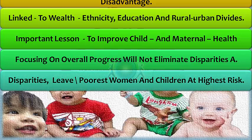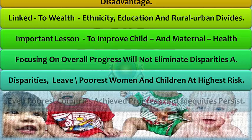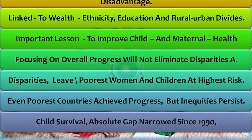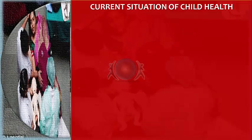These disparities leave the poorest women and children at the highest risk in society. While even the poorest countries have achieved considerable progress, inequities still persist in terms of child survival. The absolute gap has substantially narrowed since 1990, but great inequities still remain between rich and poor countries.